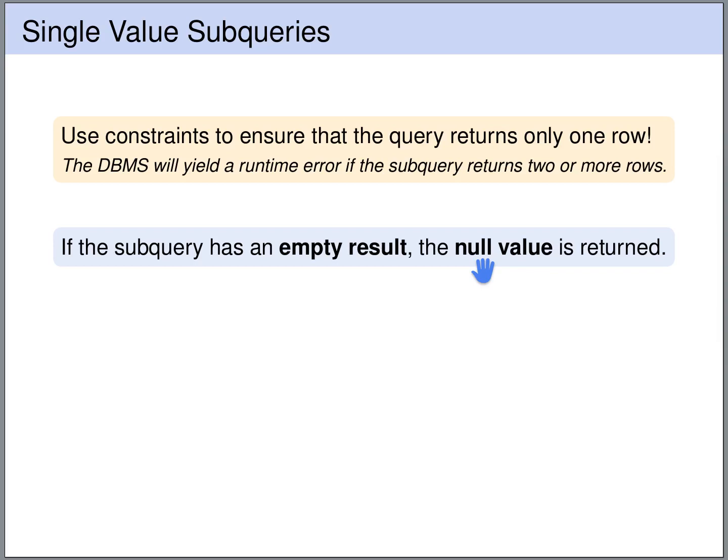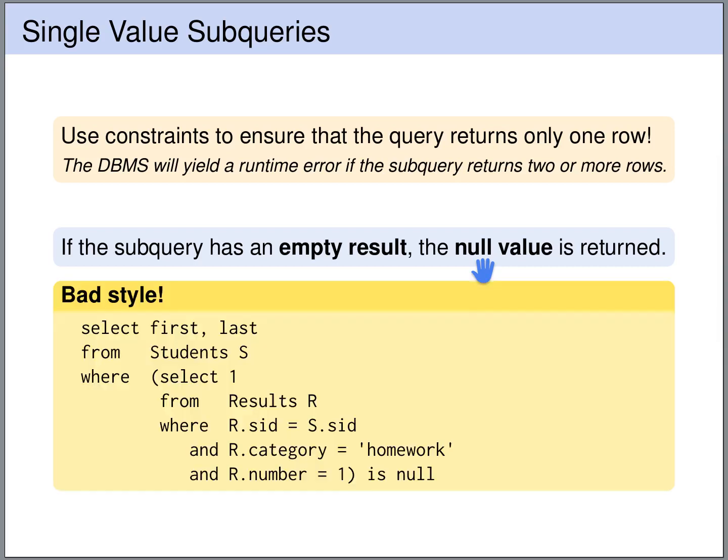So in principle we could abuse this, we could use this to check for an empty subquery result. We could do this as follows, we can write our subquery and we could say is null. So basically this is saying not exists. However, this is considered bad style, so if you want to check whether a subquery is empty, you should really use exists or not exists.